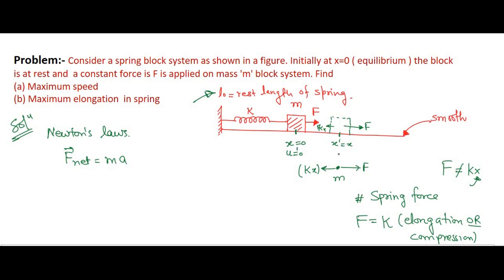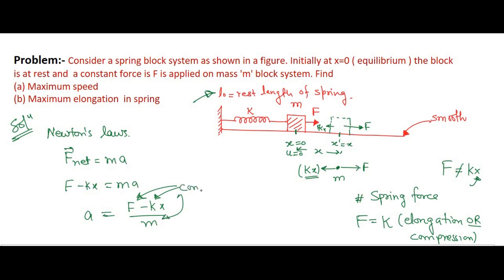Here the elongation is x — the spring has stretched from its natural length to this point — so we write the spring force as k·x. The net force is therefore F − kx, and this equals mass times acceleration. So acceleration = (F − kx)/m. Since F, k, and m are all constants, the only variable is x, making acceleration a variable quantity.